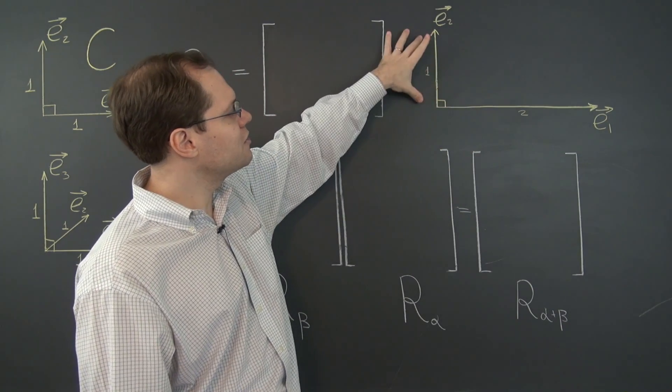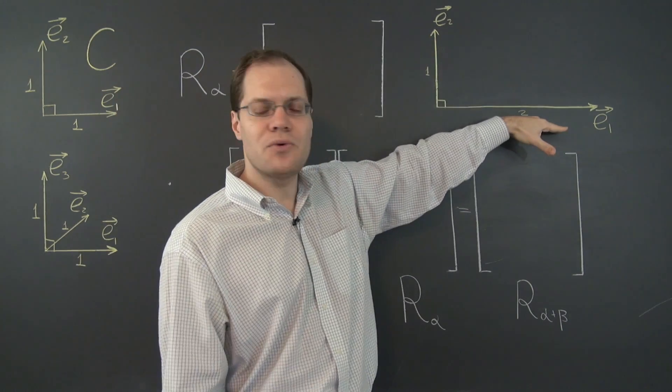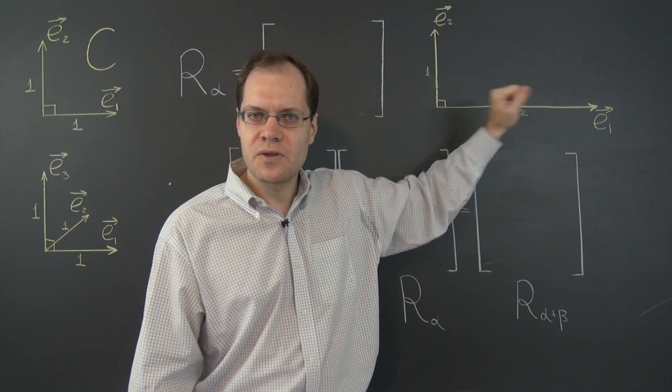It's still orthogonal. And one of the vectors is length 1, but the other one is length 2. Okay.